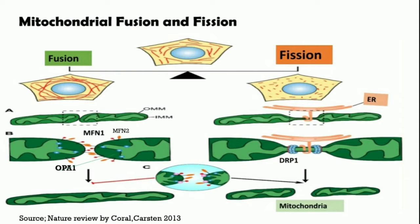The fission of mitochondria is primarily orchestrated by DRP-1, which translocates from the cytosol to mitochondria, binding to its outer mitochondrial membrane partners — the receptors such as mitochondrial fission factor, MiD49, MiD51, and mitochondrial fission 1 protein. Following this binding, DRP-1 oligomerizes and drives constriction at sites where endoplasmic reticulum wraps around mitochondria, which marks the mitochondrial division site.